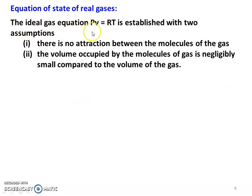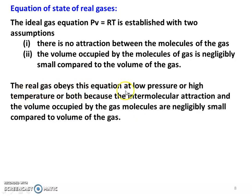Equation of state for real gases: the ideal gas equation PV equal to RT is established with two assumptions — there is no attraction between molecules of the gas, and the volume occupied by molecules of gas is negligibly small compared to the volume of the container. The real gas obeys this equation at low pressure and high temperature because the intermolecular attraction and the volume occupied by the gas molecules are negligibly small.